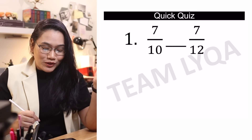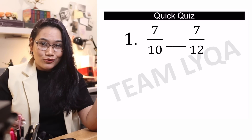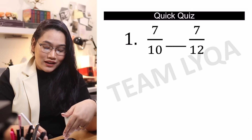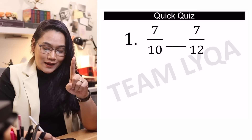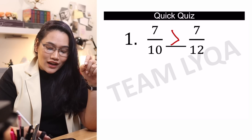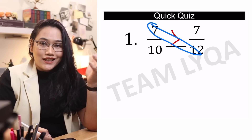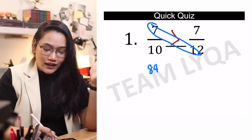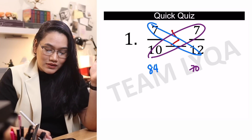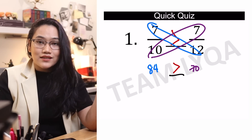Alright, let's see how you did. Number 1 muna tayo — 7 over 10 and 7 over 12. Speed technique: pareho sila ng number sa taas, so ibig sabihin mas malaki yung mas maliit ang number na nasa ilalim — this will be 7 over 10. Kung gusto mo manigurado, cross multiplication tayo: ang 7 and 12 is 84, and ang 10 and 7 naman ay 70. Still, mas malaki yung fraction na nasa left — yung 7 over 10 — kaysa sa 7 over 12.